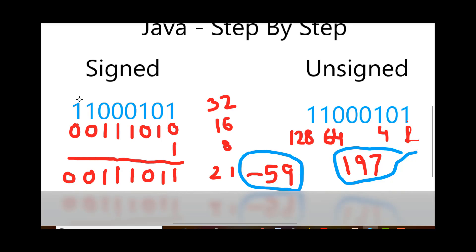In a language that supports both signed and unsigned, declaring the same variable as signed or unsigned will give you different values. In Java, you don't write signed or unsigned — all values are signed by default. So for an 8-bit number in Java, only 7 bits contribute to the value, and the leftmost bit is always reserved for the sign. This affects the range of all data types in Java.